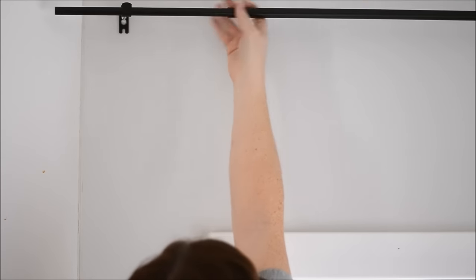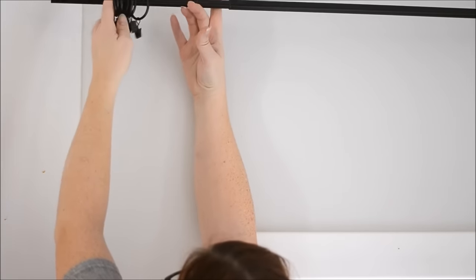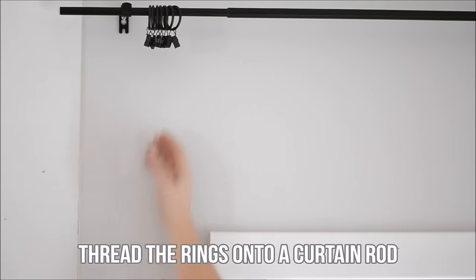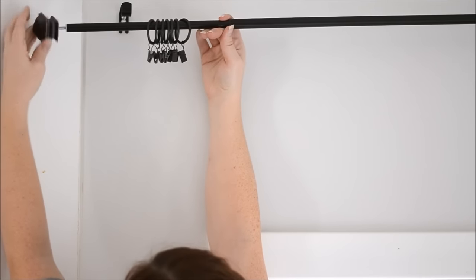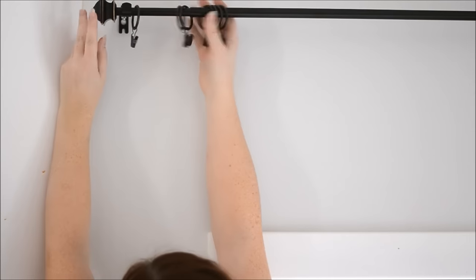Now to hang with drapery rings, simply slide some drapery rings onto your curtain rod. And I'll leave a link below or in my blog post on where you can buy these rings. There's usually about 7 of these drapery rings per panel.